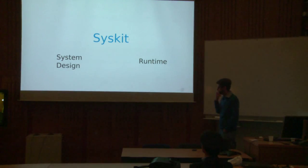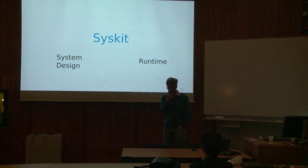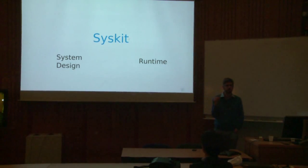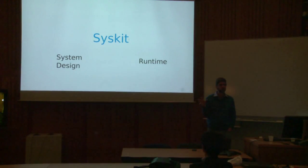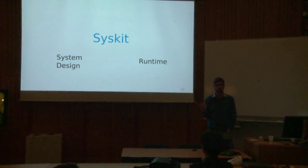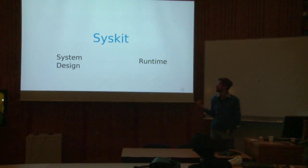Syskit today is a tool designed to make it simpler to build, manage, and run big-ish component networks — something like 40 or 50 components. Even as low as 20, you start really having trouble when you do something imperative like a ROS launch file or Ruby scripts in Rock — it gets a bit difficult.